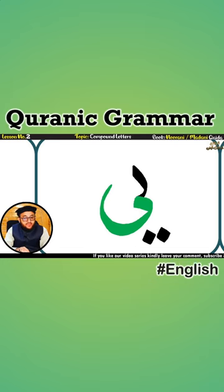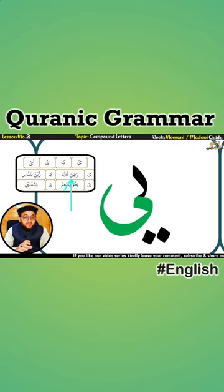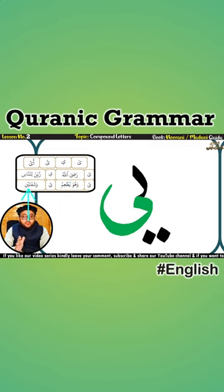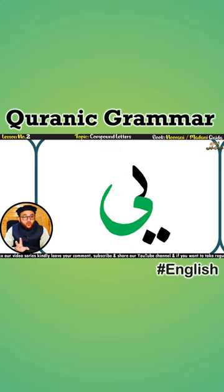Ya. Ya. Mostly when Ya comes at the end of any letter, it comes without any dot. When Ya comes in the beginning or in the middle, it comes with two dots.